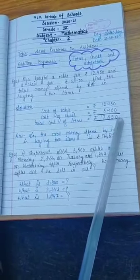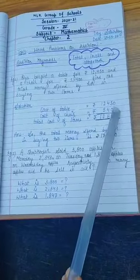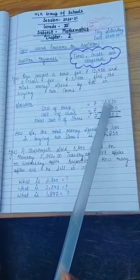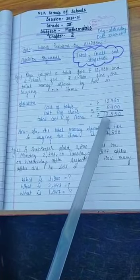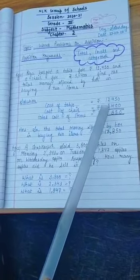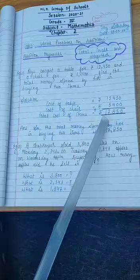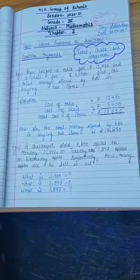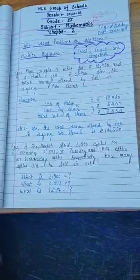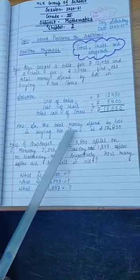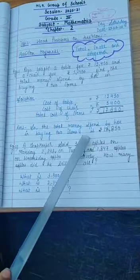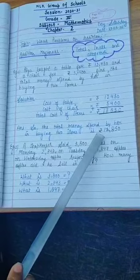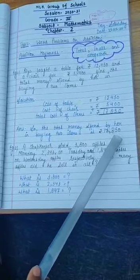0 plus 0 is 0. 5 plus 0 is 5. 4 plus 4 is 8. 2 plus 5 is 7. And 1 as it is 1. Write the answer in full statement: the total money spent by her in buying two items is rupees 17,850.